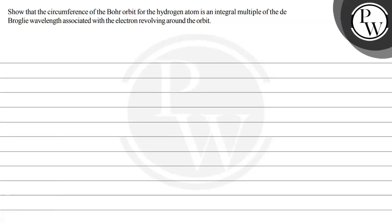Hello watcho, let's read this question. The question says show that the circumference of Bohr orbit for the hydrogen atom is an integral multiple of the de Broglie wavelength associated with the electron revolving around the orbit.